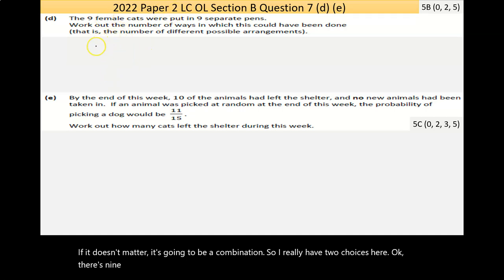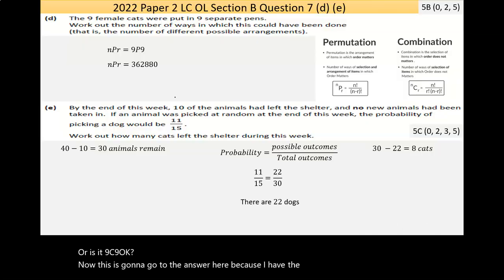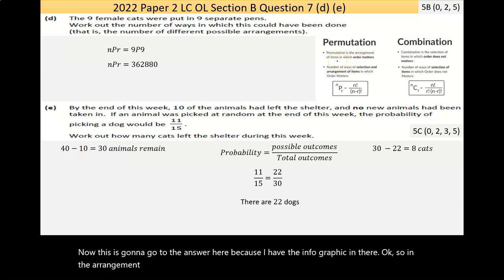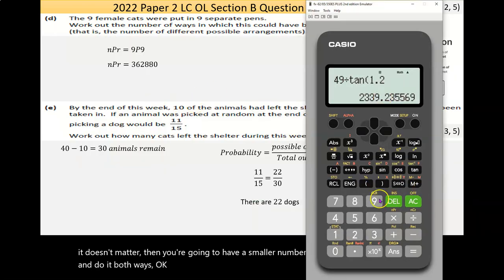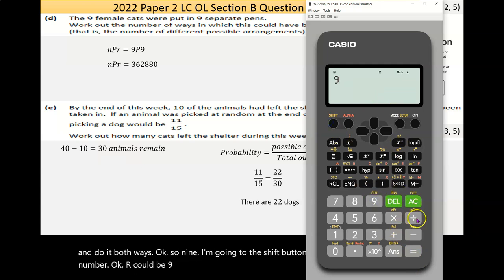So I really have two choices here. There's nine cats in nine pens. So 9P9, or is it 9C9? Now, I'm just going to go to the answer here, because I have an infographic in there. So in a permutation, the arrangement of the items matters. So it's going to be a larger number. Whereas, if it doesn't matter, then you're going to have a smaller number. I'm going to use the calculator there and do it both ways. So 9, I'm going to shift the shift button. NPR button 9 gives me this number. Or it could be 9, shift, C, 9 gives me 1. Seems low. But whatever. It wrecks my head.